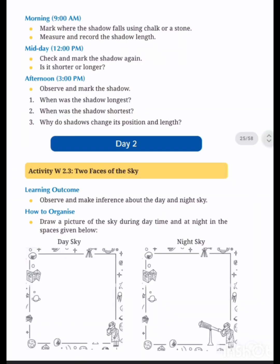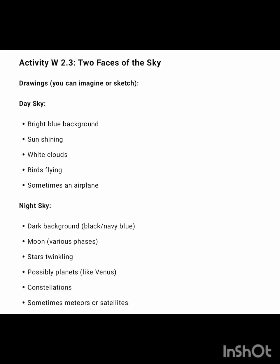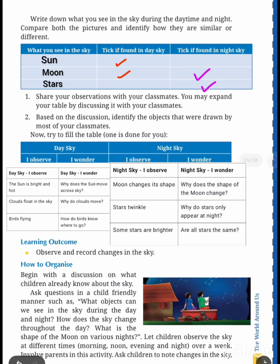Next is day two. In day two, activity 'Two Faces of the Sky' — you have to write day sky and night sky, and draw or paste a picture. This is the answer for shadow tracking and watching the sun's movement. Activity 2.3: Two Faces of the Sky — day sky is bright with a blue background, sun shining, white clouds. At night time: stars sprinkling, possible planets.